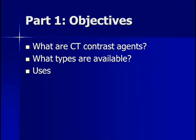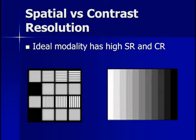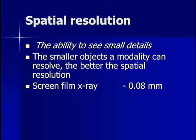For part one, we will cover what CT contrast agents are, what types are available, and what their uses are. First, we must cover spatial resolution versus contrast resolution. The ideal imaging modality would have both high spatial resolution and high contrast resolution, but that is not always possible in radiology. Spatial resolution is the ability to see small details — the smaller the objects a modality can resolve as two separate structures, the better the spatial resolution. The best spatial resolution is plain screen film radiography at 0.08 mm, compared to digital radiography, then CT at 0.4 mm.